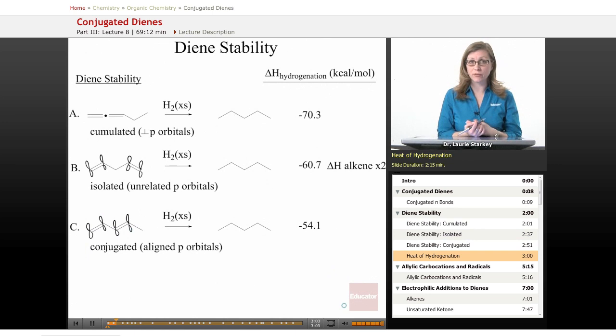We can take a look at the heats of hydrogenation for each of these dienes to see if we can observe some differences in their energies. When you catalytically hydrogenate each of these, they get the same product - pentane. All those have the same energy, so when we measure the ΔH, that gives us a relationship that tells us something about the initial energy of our starting materials.